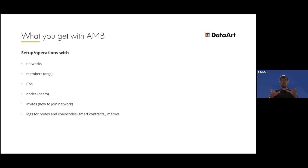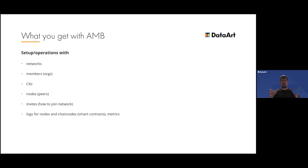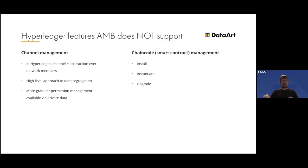Once consensus is fulfilled and voting is successful, you can send an invite to the new member, who may then create an actual member and peer in the network and work as any other participant. This is all abstracted away and can be done literally through the console. There is also a set of logs for nodes and chaincode with metrics even for channels.